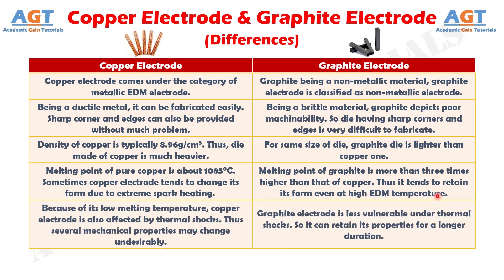Number 5: because of its low melting temperature, copper electrode is also affected by thermal shocks, and thus several mechanical properties may change undesirably. Whereas, graphite electrode is less vulnerable under thermal shocks, so it can retain its properties for a longer duration.